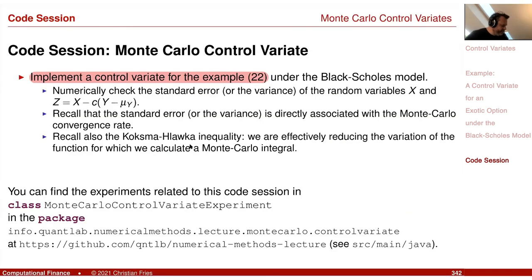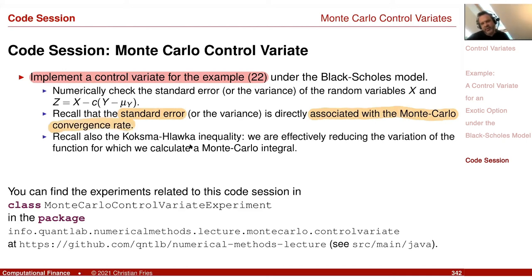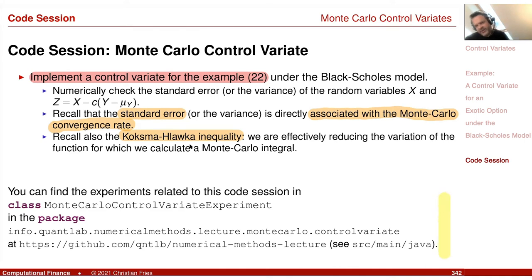We completed this programming exercise. The standard error printed is directly associated with the Monte Carlo convergence rate. Reducing the variation of the function reduces the error, consistent with the Koksma–Hlawka inequality. The code is available in the repository for further exploration. That was it for control variance — thank you.